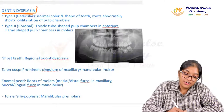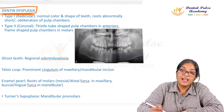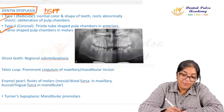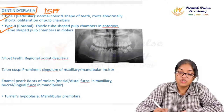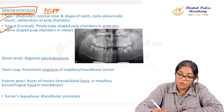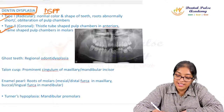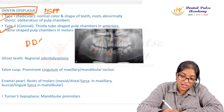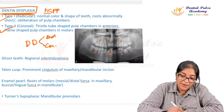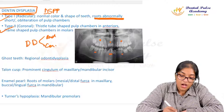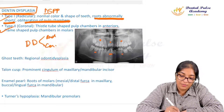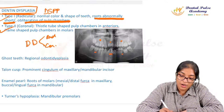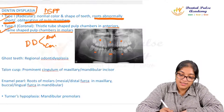Dentine dysplasia is an anomaly due to DSPP (dentine sialoprotein) mutation. Type 1 (radicular) shows abnormally short roots with obliterated pulp chambers but normal tooth color and shape. Type 2 (coronal) shows normal roots with flame-shaped pulp chambers in molars. A radiograph from a recent NEET examination showed teeth with underdeveloped roots and lack of root formation across almost all teeth, pointing to dentine dysplasia.